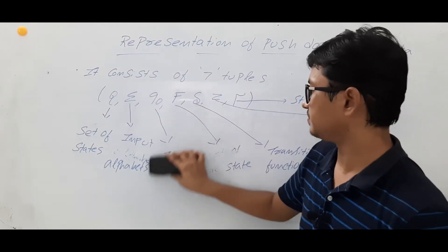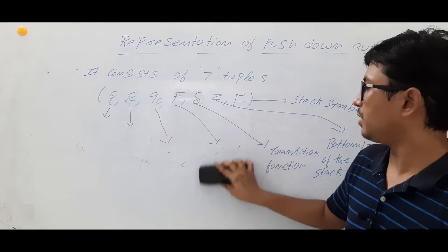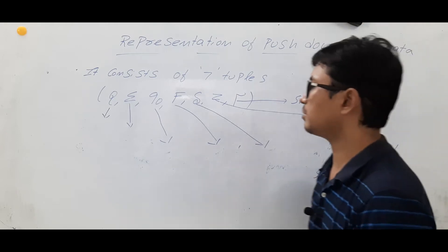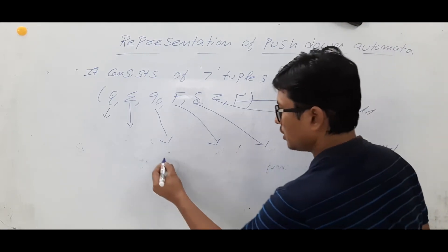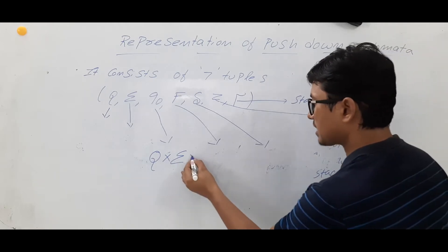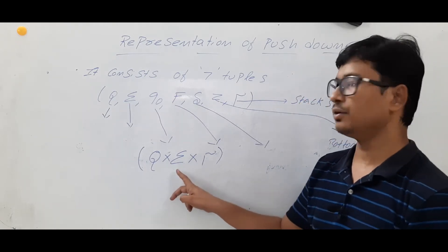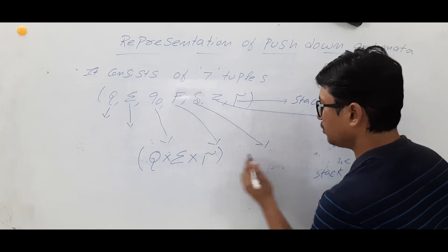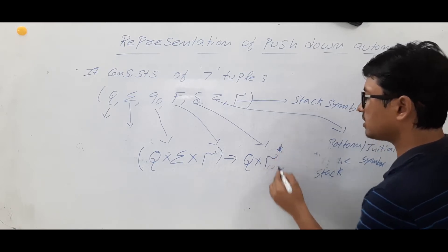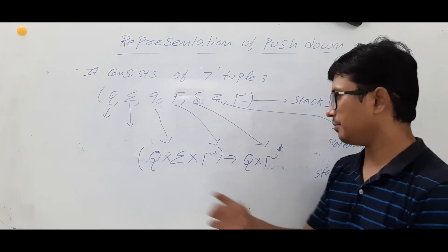Now we will discuss the transition function. Just like in DFA we have a transition function, here also we have one. The transition function of the pushdown automata works as follows: you are in some state, looking at an input alphabet and a stack symbol Tau, and you are able to go to a new state and modify the stack symbol.